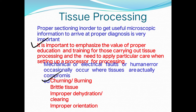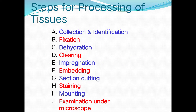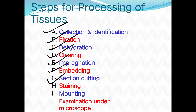Tissue processing is time-consuming; if any step is mistaken, all the time is wasted. The complete steps are: collection and identification of tissue, fixation, dehydration, clearing, impregnation, embedding, section cutting, staining, mounting, and finally examination under the microscope.